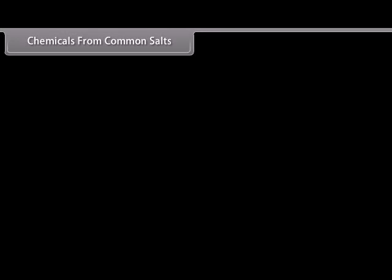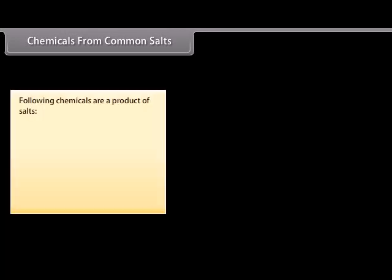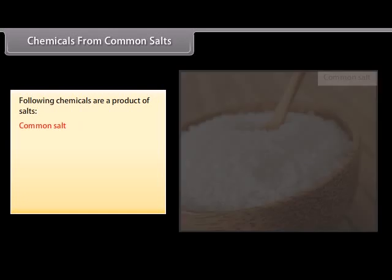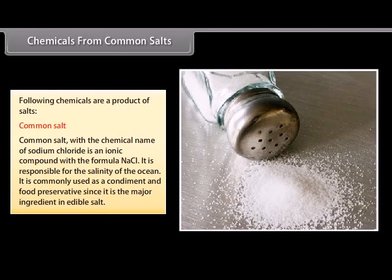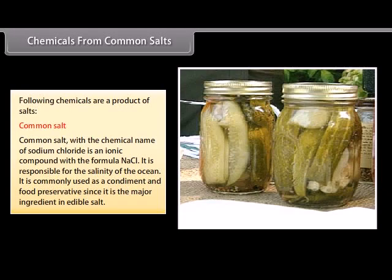Chemicals from common salts. The following are some of the chemicals produced from salts. Common salt. Common salt with the chemical name of sodium chloride is an ionic compound with the formula NaCl. It is responsible for the salinity of the ocean. It is commonly used as a condiment and food preservative since it is the major ingredient in edible salt.